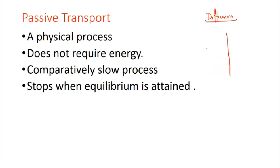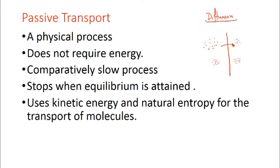Molecules diffuse from where they are present in higher concentration to where the concentration is comparatively low. They stop as soon as equilibrium is attained, meaning the concentration on both sides becomes equal. In a real cell this may not be the final state, as the cell may further need more such molecules for its functioning. Passive transport uses the kinetic energy of molecules and natural entropy or randomness for the transport of molecules.